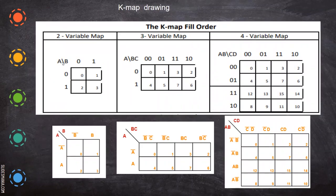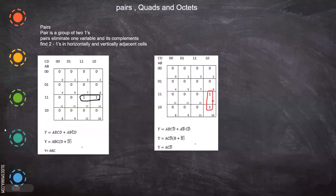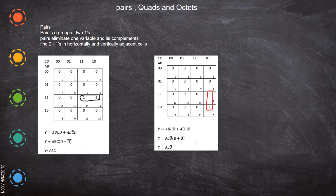After seeing how to draw a K-map for two variables, three variables, and four variables, now we are going to see some more information before proceeding to the actual building of equations. So pairs, quads, and octets — these are the main things through which we reduce the variables, just like in Boolean algebra where we substitute Boolean laws to reduce variables. Here there is no need for remembering the Boolean laws involved.